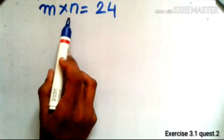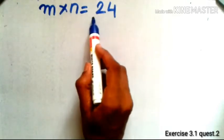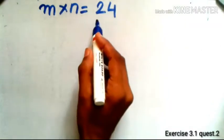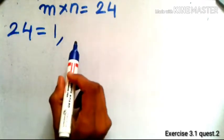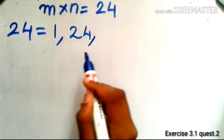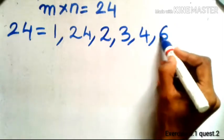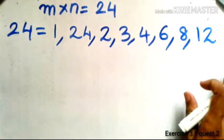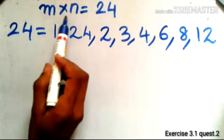To find pairs whose product is 24, we need to find the factors of 24. The factors of 24 are: 1, 2, 3, 4, 6, 8, 12, and 24. We are interested in pairs of these factors whose product equals 24.